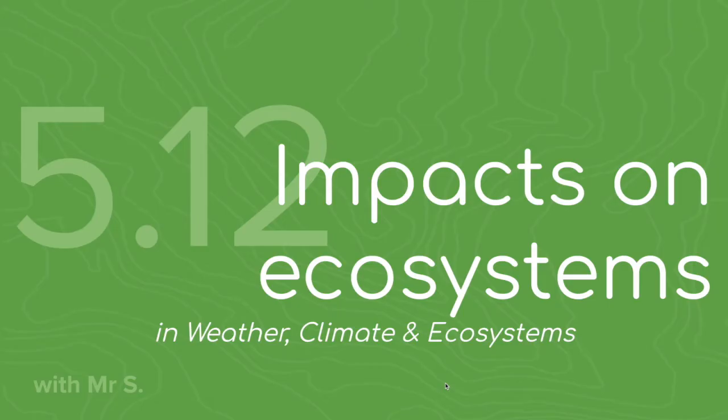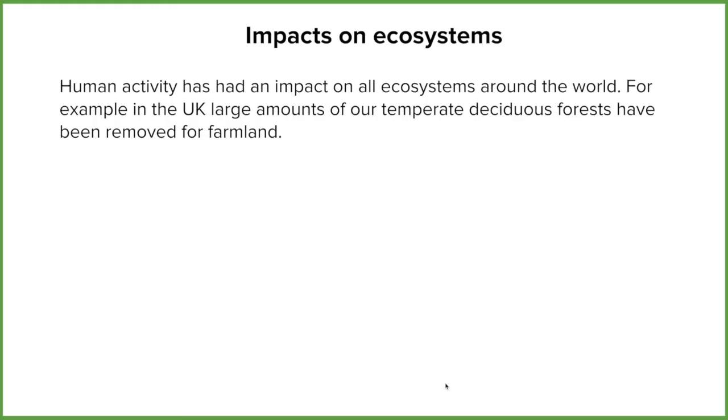I'm Mr S and I'll be your five-minute teacher. Human activity has had an impact on all ecosystems around the world. For example, in the UK, a large amount of our temperate deciduous forests have been removed for farmland. So what's happening in the tropical rainforests? Well, let's find out.